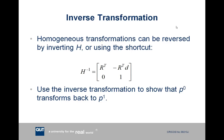Like rotation matrices, sometimes we want to go in the opposite direction — from a point in reference frame 0 back to coordinates in reference frame 1. We can invert the H matrix, and there is a handy shortcut: the inverse homogeneous transform is made up of the transpose of the rotation matrix in the top left, the negative of the transpose of the rotation matrix times the displacement vector in the top right, and a bottom row of zeros followed by a 1.